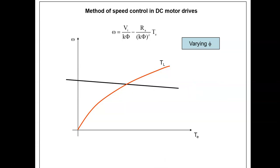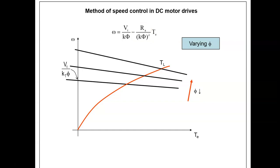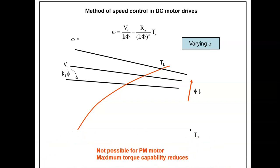The last method is to vary the flux. As we vary the flux, both terms of the speed-torque characteristic equation change — the intersection point as well as the slope. As we reduce the flux, the negative slope increases and the intersection point increases as well. However, we should remember that as we reduce the flux, we are reducing the torque capability of the machine, because the torque of the motor is given by Te equals K*phi*Ia. It is also not possible to use this technique if the flux comes from a permanent magnet, i.e., if the motor is a permanent magnet motor.